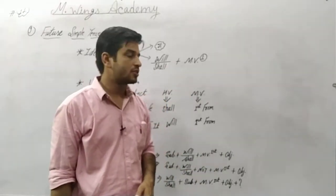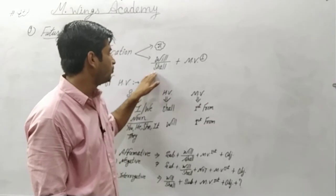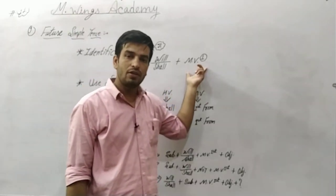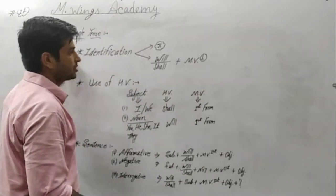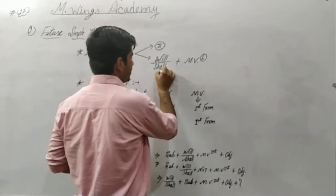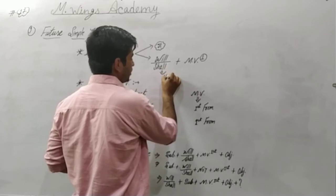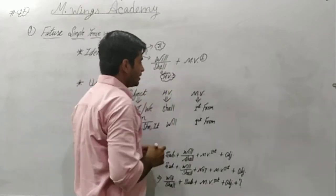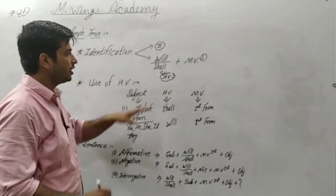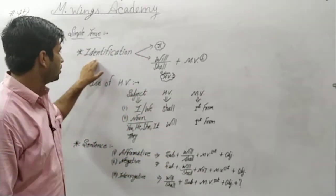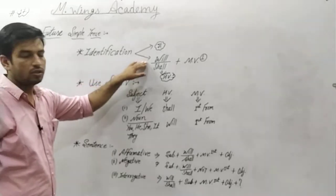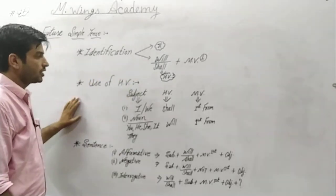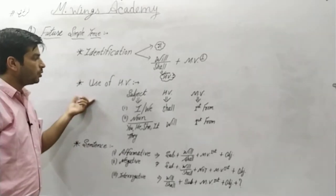If the given sentence is in English, find the helping verb and main verb in the sentence. If you find 'will' or 'shall' with the main verb in first form, that will be your Future Simple Tense. Here 'will' or 'shall' is the helping verb of the sentence.